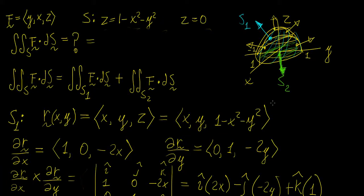In this video we're going to be solving another example on flux integrals. We're given the vector field (y, x, z), and a surface that is actually the connection of two surfaces. The first one is a paraboloid which is concave down, described by the equation 1 minus x squared minus y squared, and on the bottom we have another surface described by the plane z equals 0.